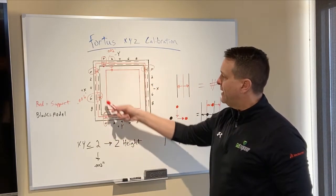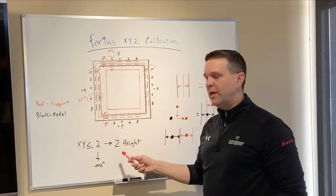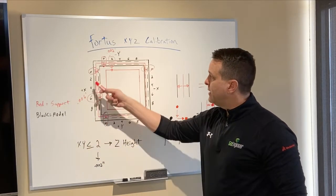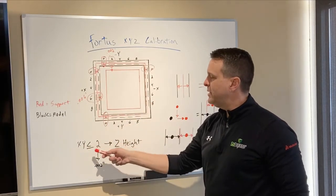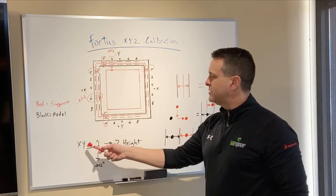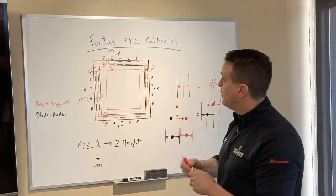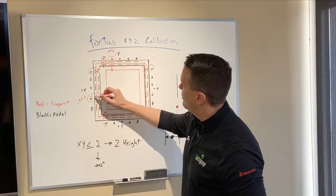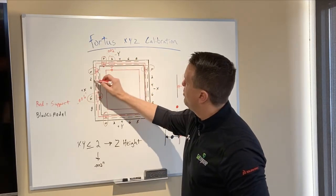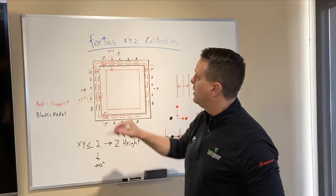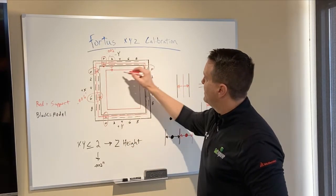Now finally, this inner square, that's actually your Z height. X and Y need to be less than or equal to 2 or 2,000s. So I need to have both of them, in this case, we do not. I need to have both of them at 2 or less in order to check the Z height.